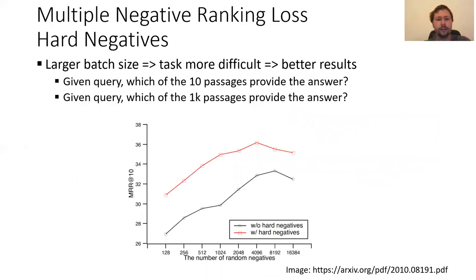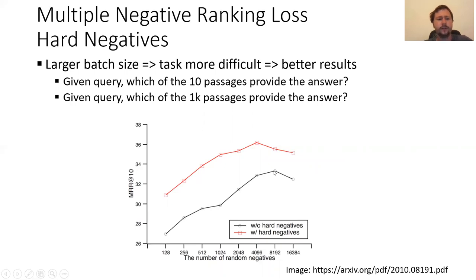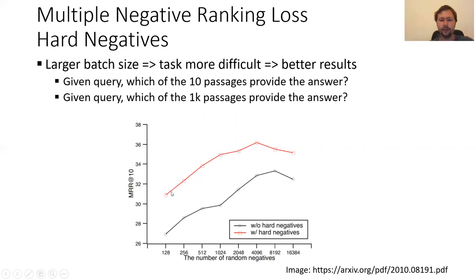To improve quality, the simplest trick is to increase your batch size. With larger batch size, the task gets more difficult and you get better results. Batch sizes from 128 up to 16,000 on the MS MARCO dataset show performance improving consistently as batch size increases — intuitive, like a multiple choice test with 10 possible answers versus 1,000 possible answers. The other trick is using hard negatives, shown as the red line, which provides a significant performance boost at the same batch size.